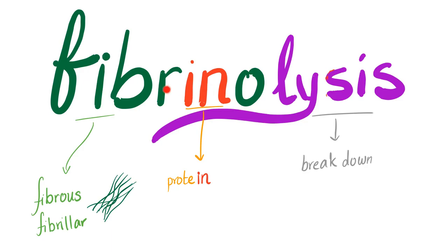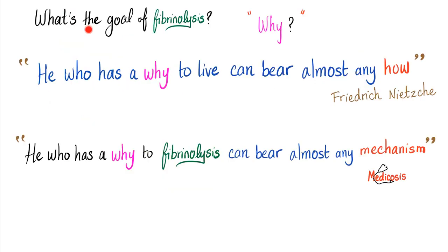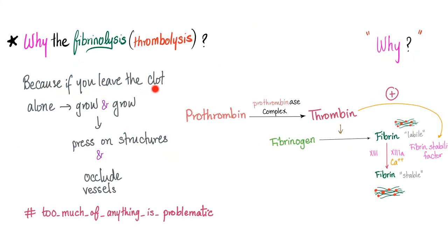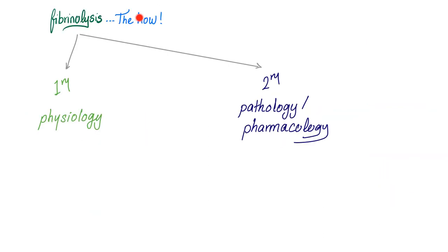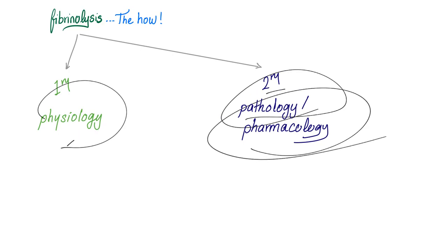Fibrinolysis: fibrin is the protein made of fibers; lysis is to break down — aka to beat the crap out of the clot. What's the goal of fibrinolysis? As Friedrich Nietzsche said, he who has a why can bear almost any how. If you leave the clot alone, it will grow and grow and press on structures, occlude vessels, until you die. Too much of anything is problematic, so you better break this clot down after it has done its job. Fibrinolysis has two types: primary, which is physiology, and secondary, which involves disease.